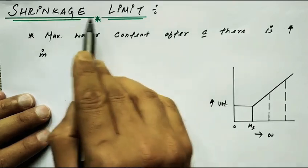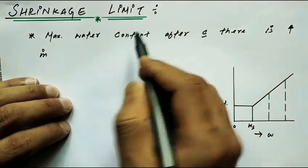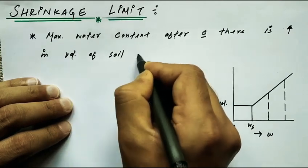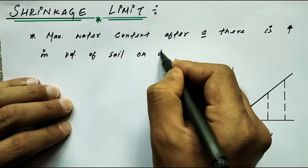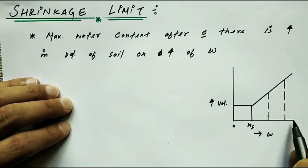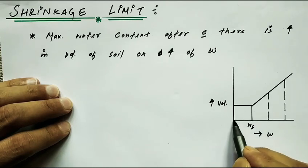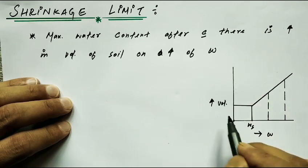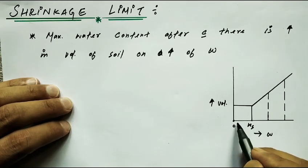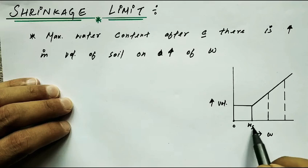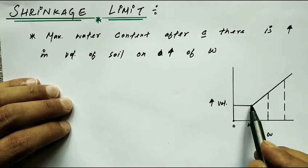So first of all, what is shrinkage limit? Shrinkage limit is the maximum water content after which there is an increase in volume of soil on addition of water, or we can say on increase of water content W. See here in this picture: on the x-axis we represent water content, starting from zero and increasing away from the origin. On the y-axis we represent the volume of soil. From the origin to point WS — this water content is the shrinkage limit — there is no increase in volume of soil.